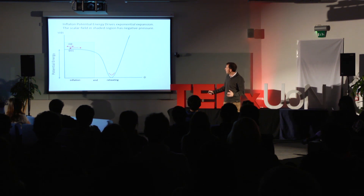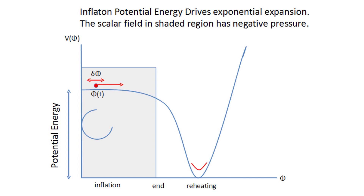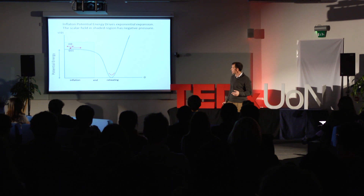So this field gradually works its way down the hill — just as you would go down a hill — it quickens up, and when it exits this shaded region, inflation stops. Then the universe is empty of everything, but we're here, so we need to reheat the universe. We recreate the particles by converting this energy into particles as it oscillates down at the bottom of its potential.